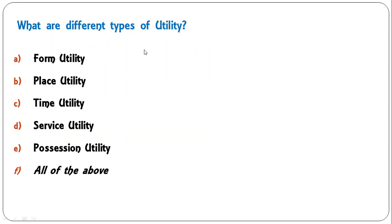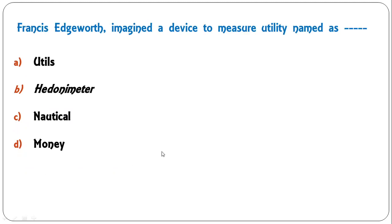Next: 'What are the different types of utility?' — form utility, place utility, time utility, service utility, possession utility, or all of the above? The correct answer is all of the above; all are different types of utility, so F is the correct answer. Francis Edgeworth imagined a device to measure utility and named it as...